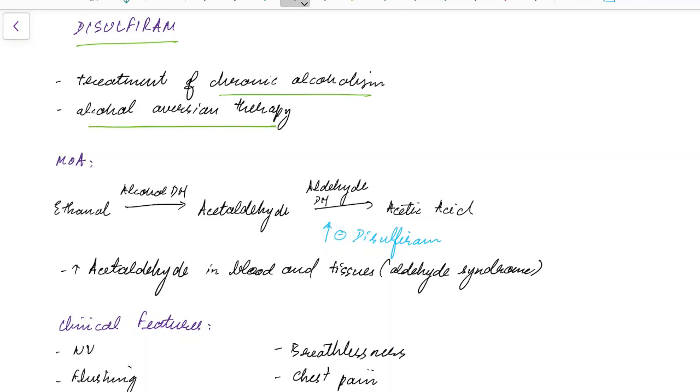Now let us see about the mechanism of action of disulfiram. Ethanol is converted to acetaldehyde by alcohol dehydrogenase. This acetaldehyde is converted to acetic acid by aldehyde dehydrogenase. This acetic acid is later excreted from our body.